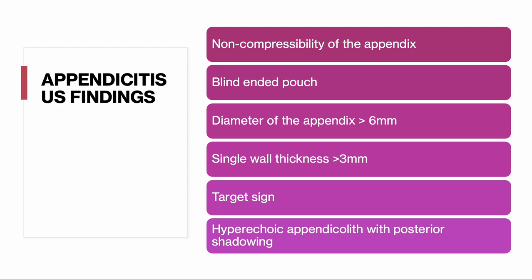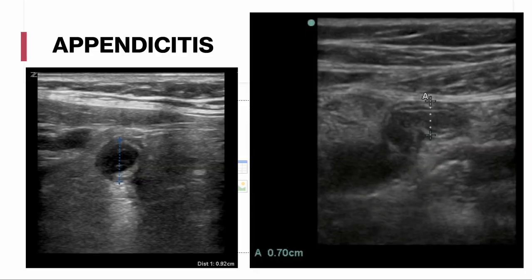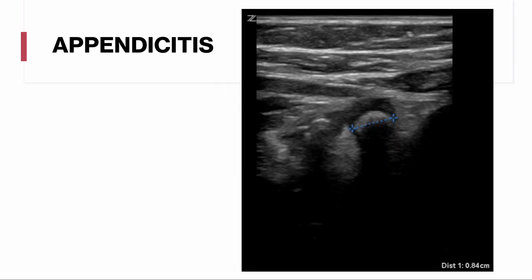Findings on ultrasound include non-compressibility of the appendix, a blind-ended pouch, a diameter over six millimeters with a single wall thickness over three millimeters. We look for the target sign, and we may see a hyperechoic appendicolith with posterior shadowing. On the left-hand side we can see a dilated appendix with diameter greater than six millimeters; on the right-hand side, a longitudinal view showing a blind-ended pouch and dilated appendix. There is also a quick image of the appendicolith demonstrating the expected posterior shadowing.